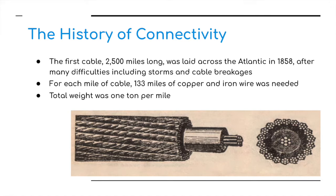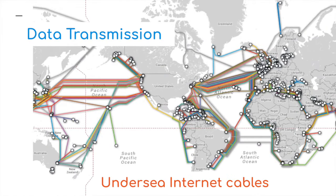Although it's not in the book, it's interesting to look at where we've come from. Back in 1858, the first cable, some 2,500 miles — about 4,000 kilometers — was laid across the Atlantic. For each mile of cable, 133 miles of copper and iron wire were needed, with a total weight of one tonne per mile. Today there are hundreds of cables delivering data across the world. Some may have thought everything was done by satellites globally, but as you can see, that is not the case.